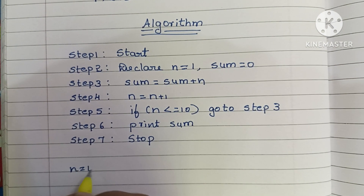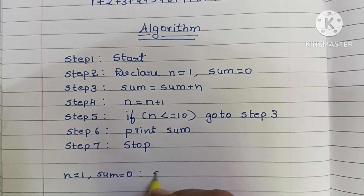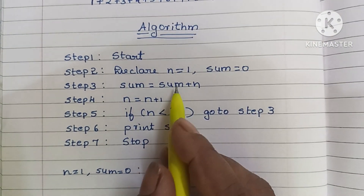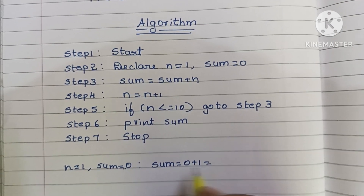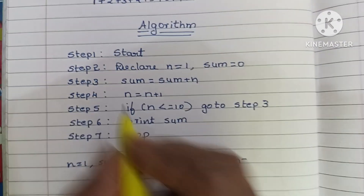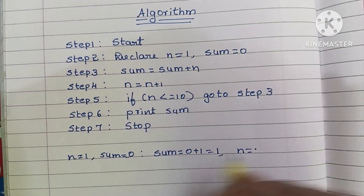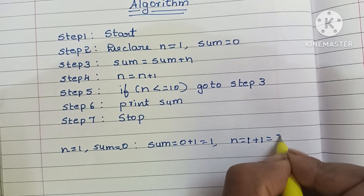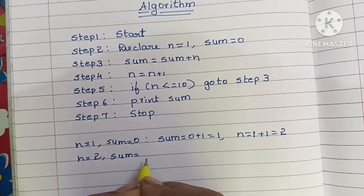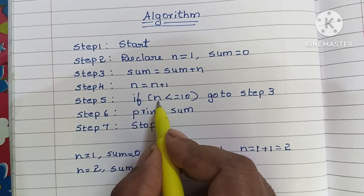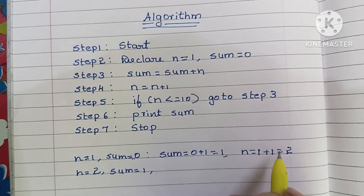Let's see how it works. Initially n = 1 and sum = 0. In step 3, sum = sum + n, which is 0 + 1, so sum becomes 1. In step 4, n = n + 1, that is 1 + 1, so n becomes 2. Now n = 2 and sum = 1. Since 2 is less than or equal to 10, we go to step 3 again.